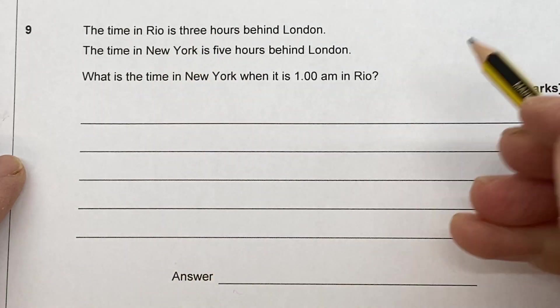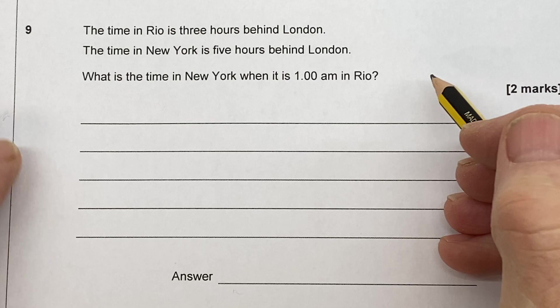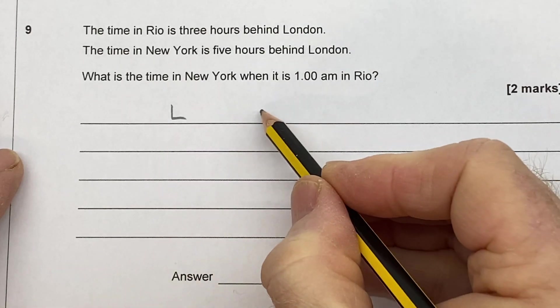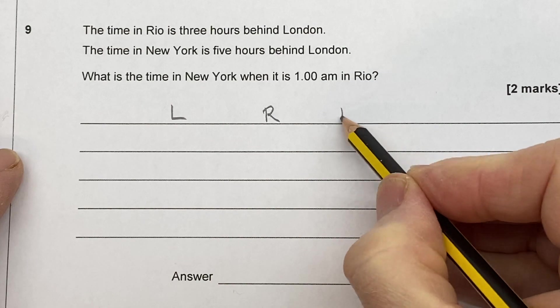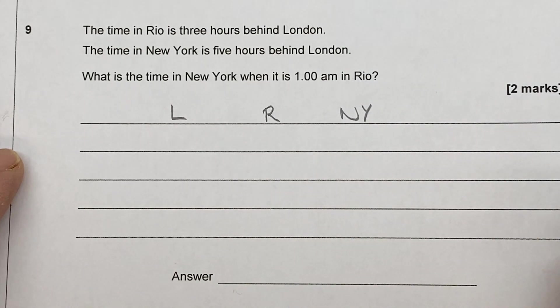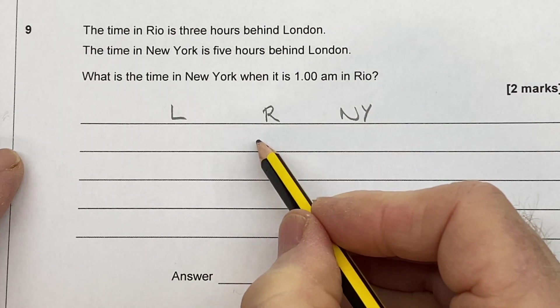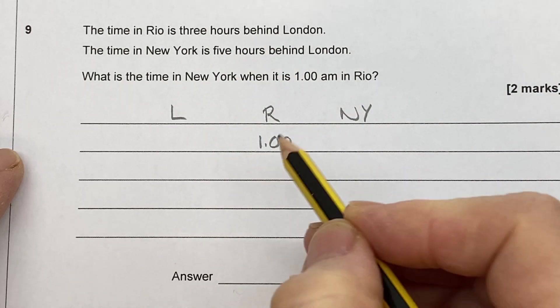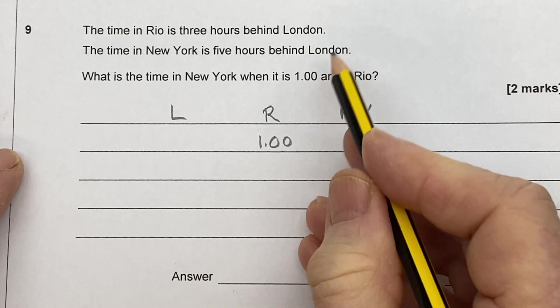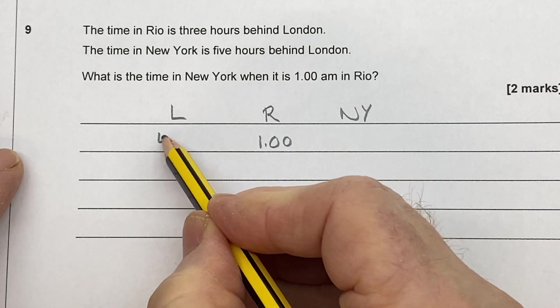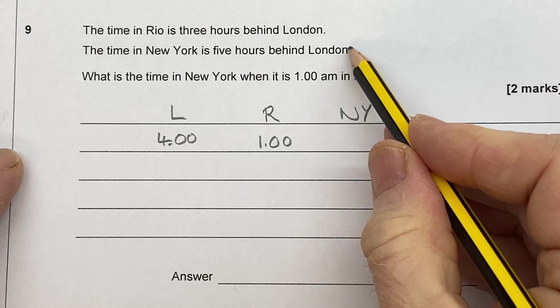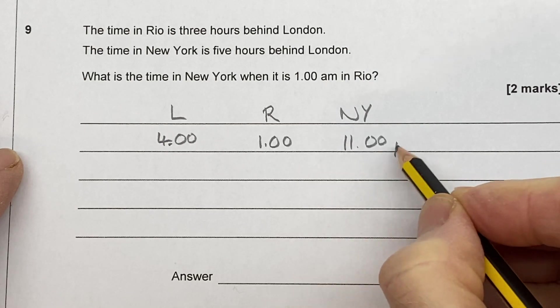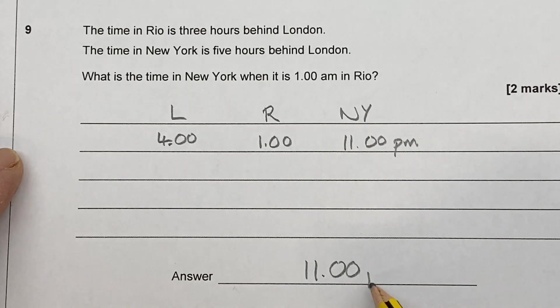The time in Rio is three hours behind London. The time in New York is five hours behind London. What's the time in New York when it is 1am in Rio? London's coming first. Rio is three hours later. And New York is five hours behind London. OK. So if it's 1am in Rio, and that's three hours behind London, so one o'clock in the morning in Rio, 1am, one o'clock in the morning. So London is three hours ahead of that. So it's four o'clock in the morning in London. But New York is five hours behind London. So go back four, we'll get to midnight. One more then. So it is 11pm. Mustn't forget the pm. 11pm in New York.